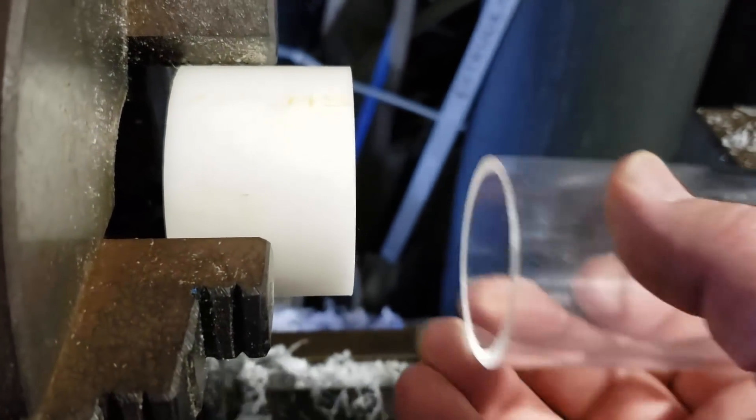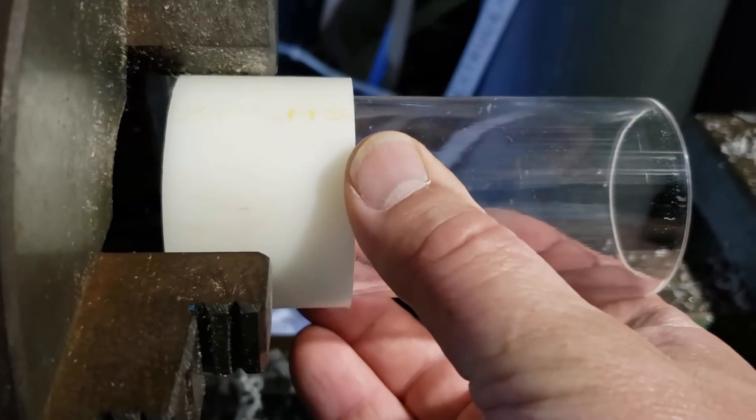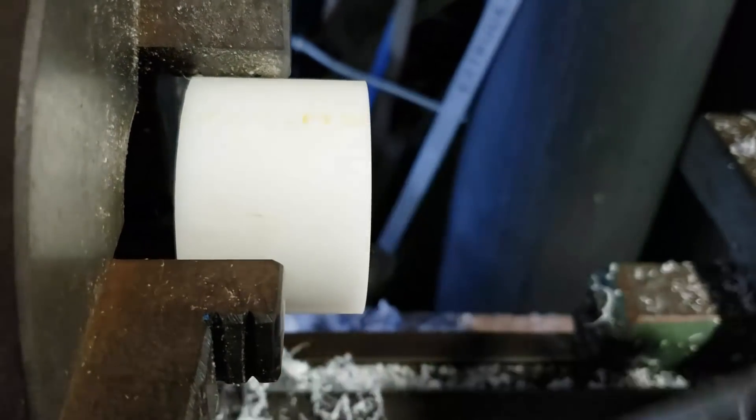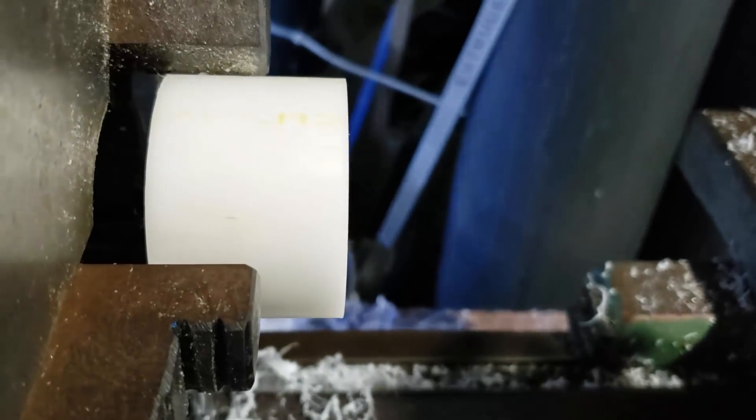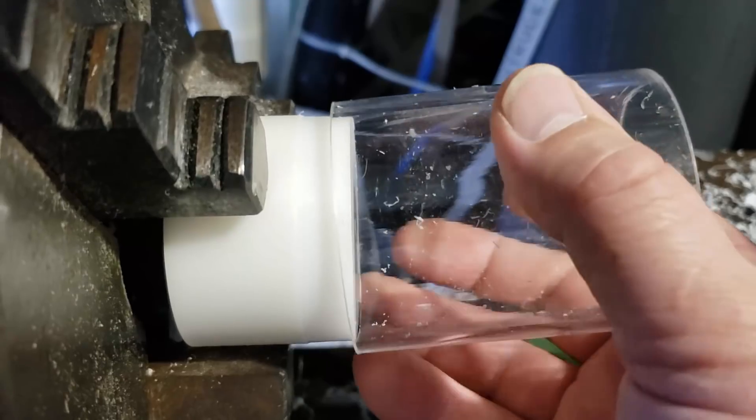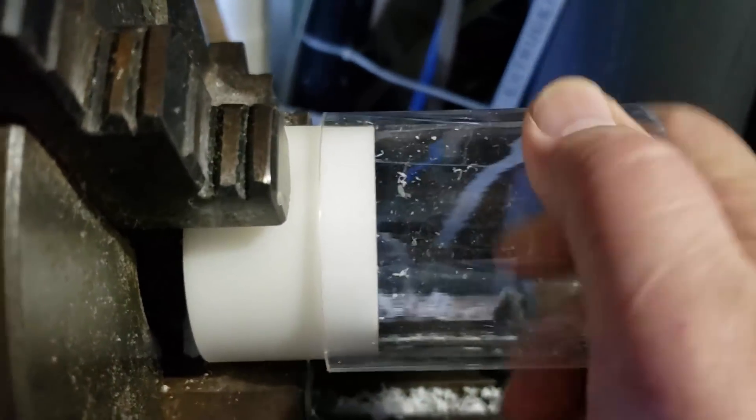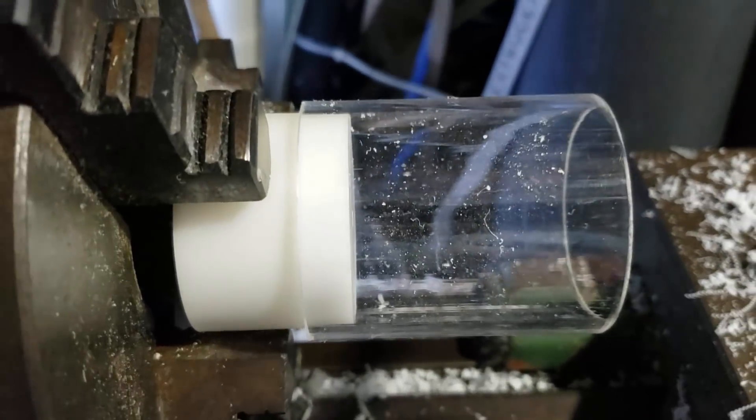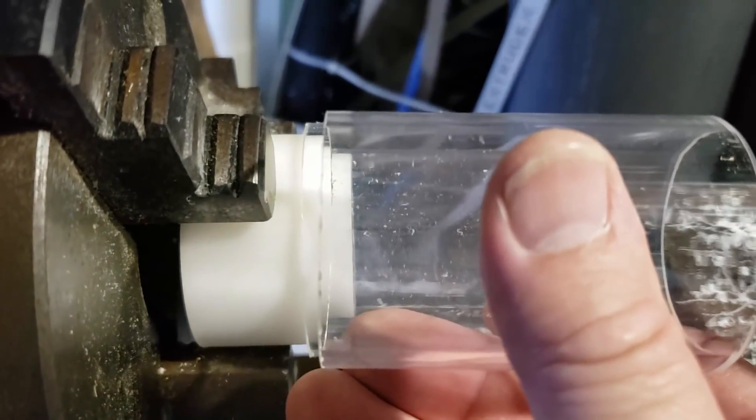Now to make the bushings I'm going to use this piece of delrin or acetal is the generic name for it. I'm running out of it so what I thought I would do is I would make both the bushings out of the one piece and I just keep flipping back and forth. And then once they're all machined properly I would just cut it down the middle, true up both ends and then I'd be good to go.